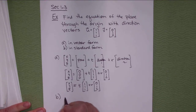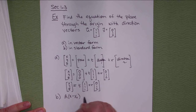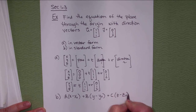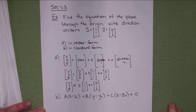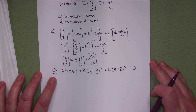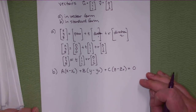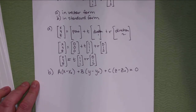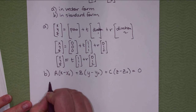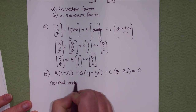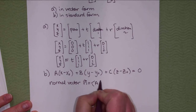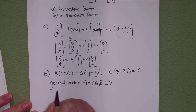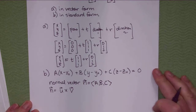For part B, standard form. We want to use the standard plane equation and work it out. For this we need both a point — we're given the origin — and the normal vector. The normal vector N has components A, B, C and it is found by taking the cross product of the two direction vectors that are in the plane. So we need to do the cross product.